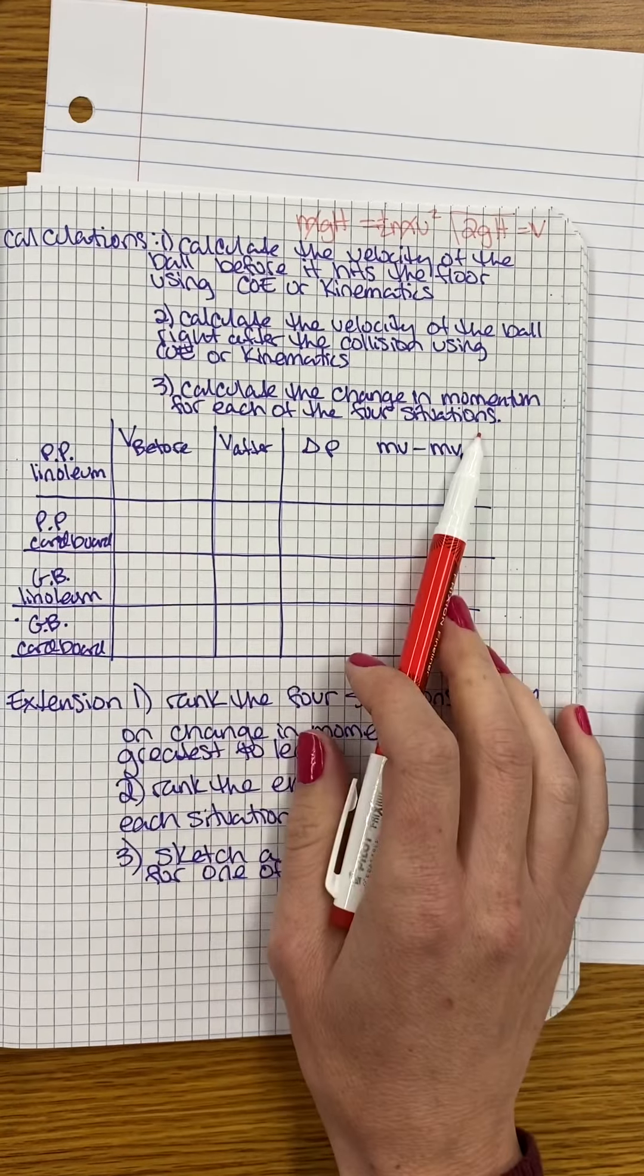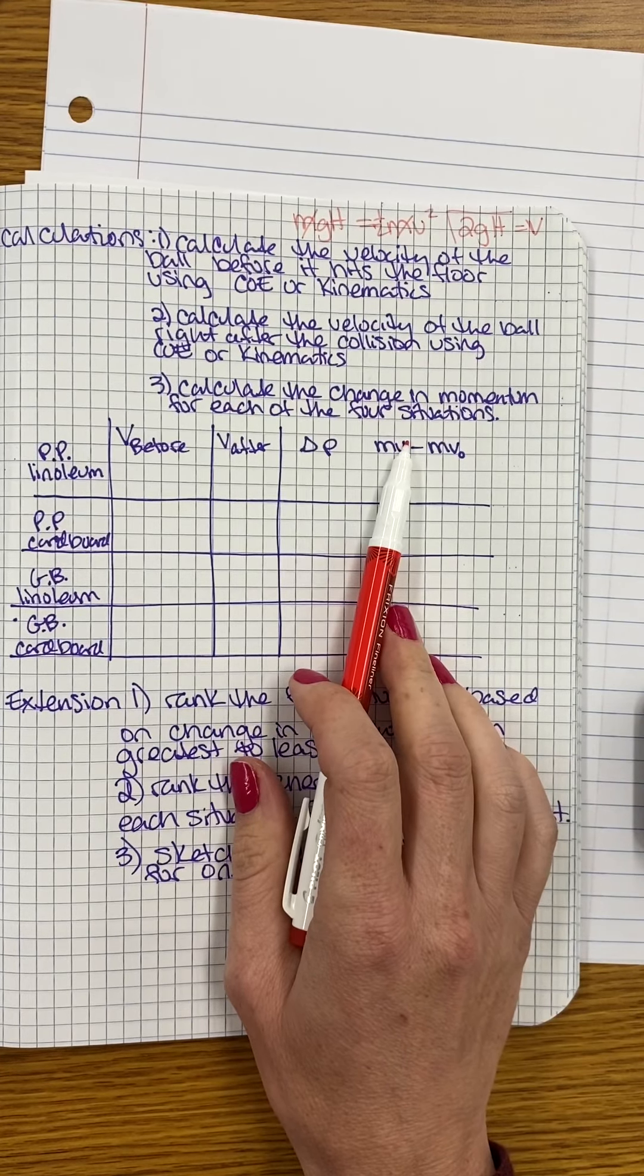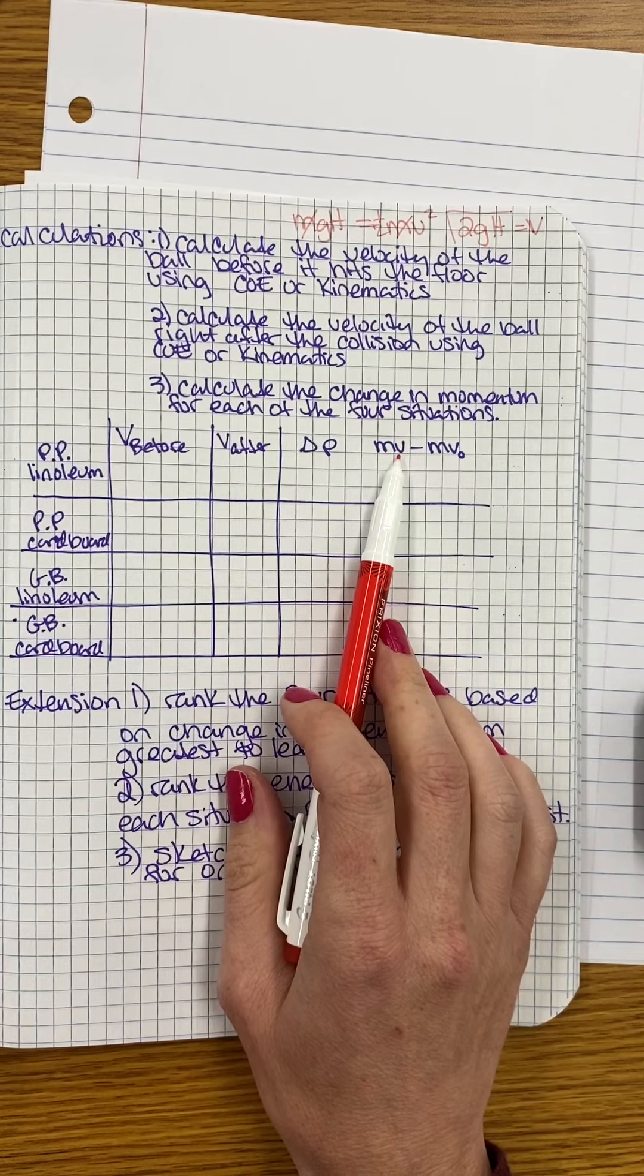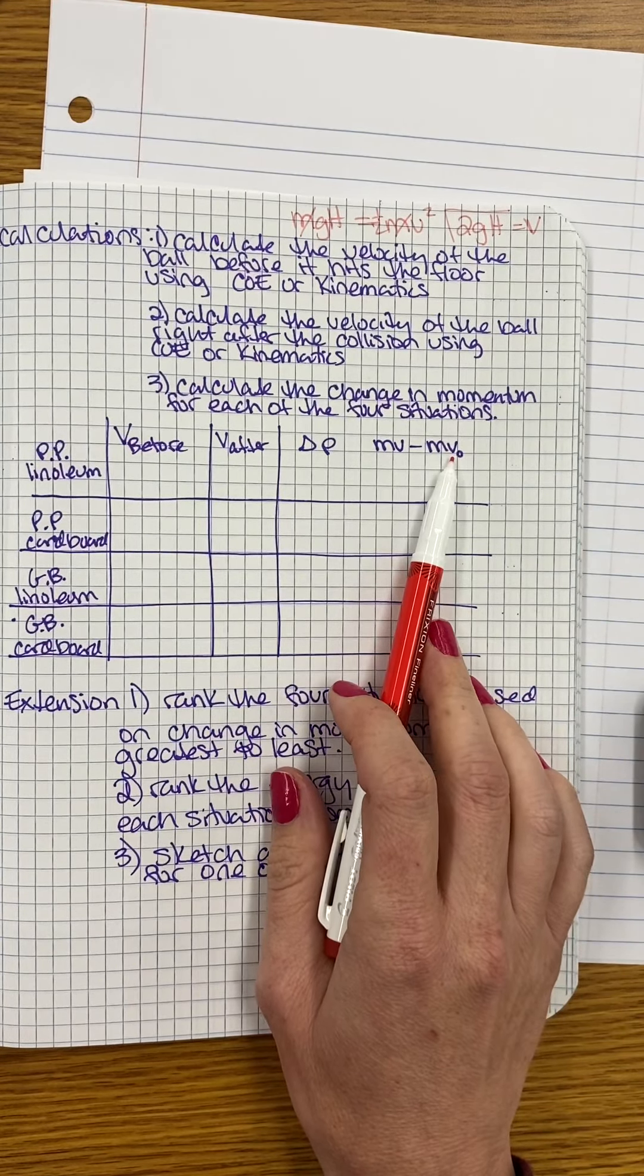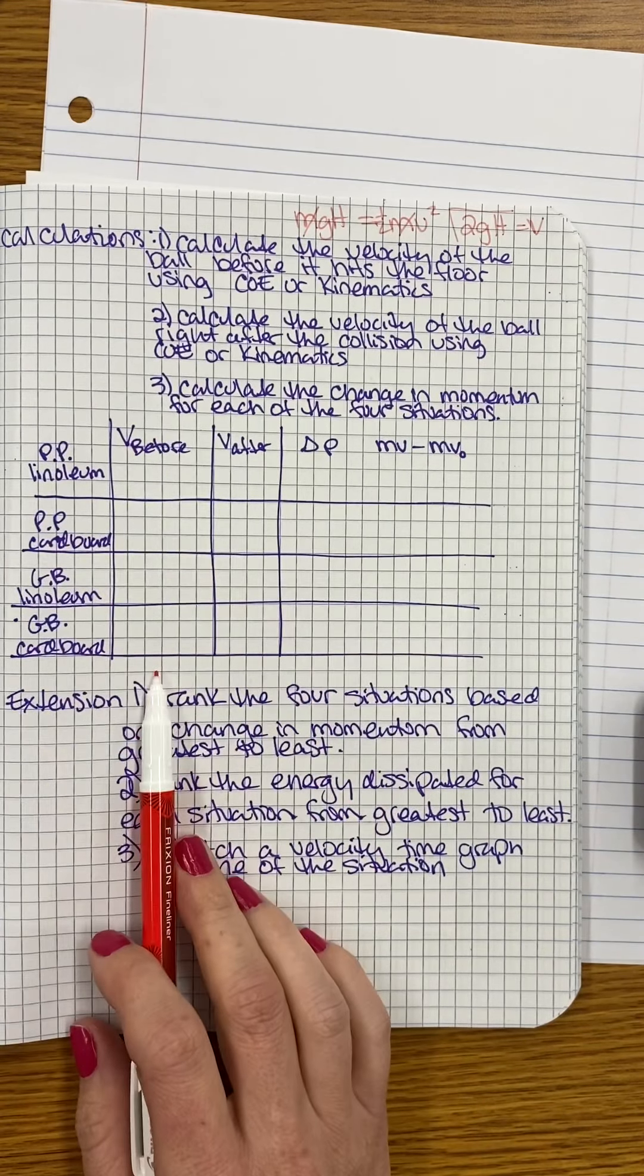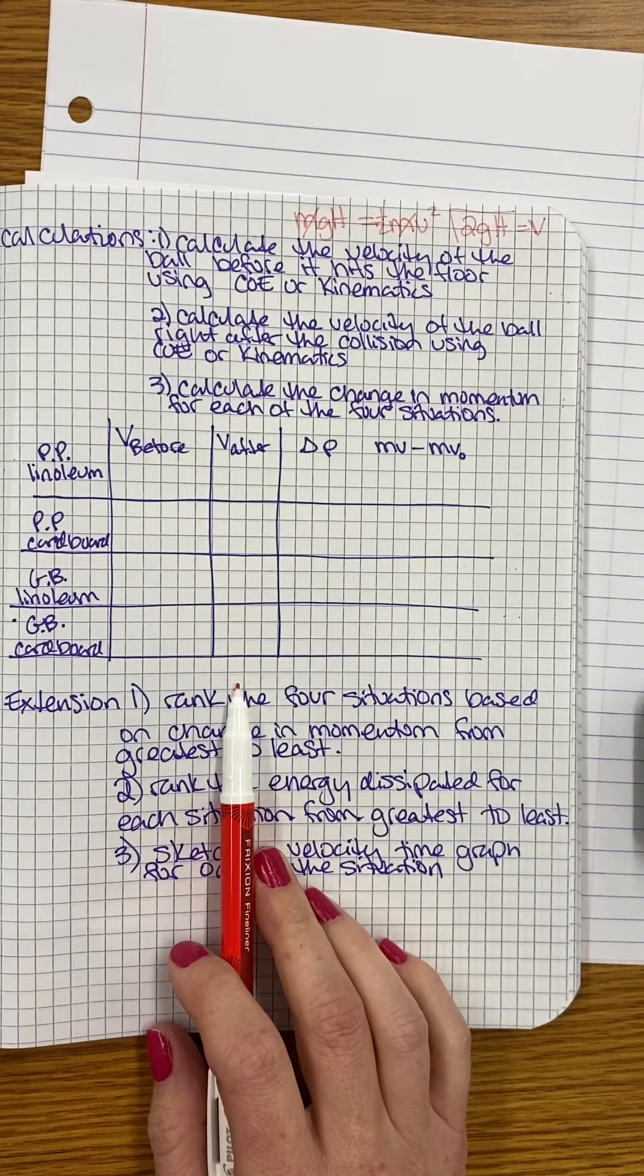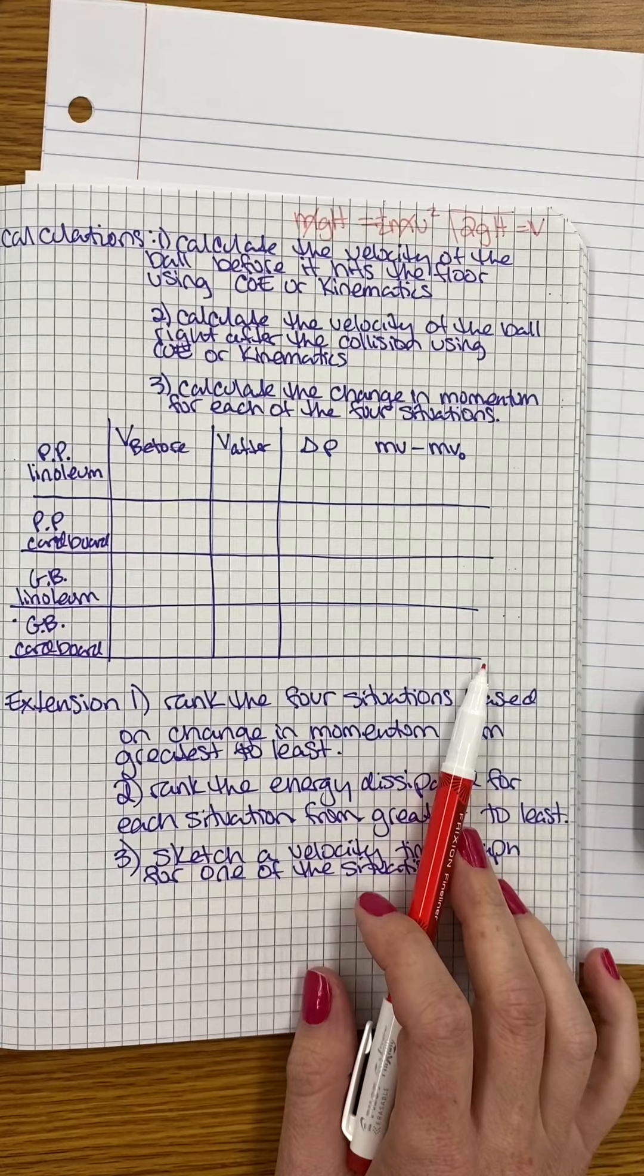And then we'll find our change in momentum for each of these, our final momentum using the velocity post-collision, and then my initial momentum using the velocity before the collision. So my velocity before and after can be calculated here, and then my momentum can be calculated here.